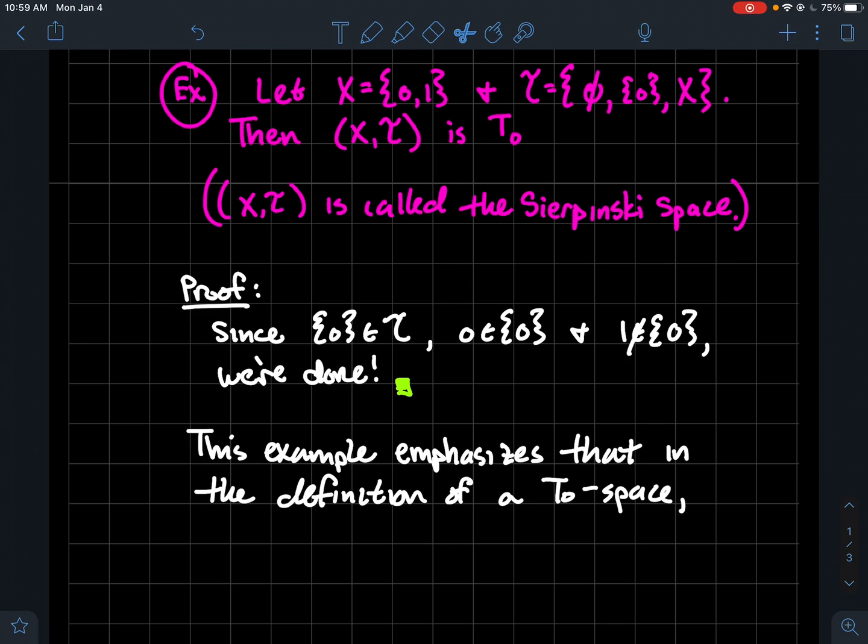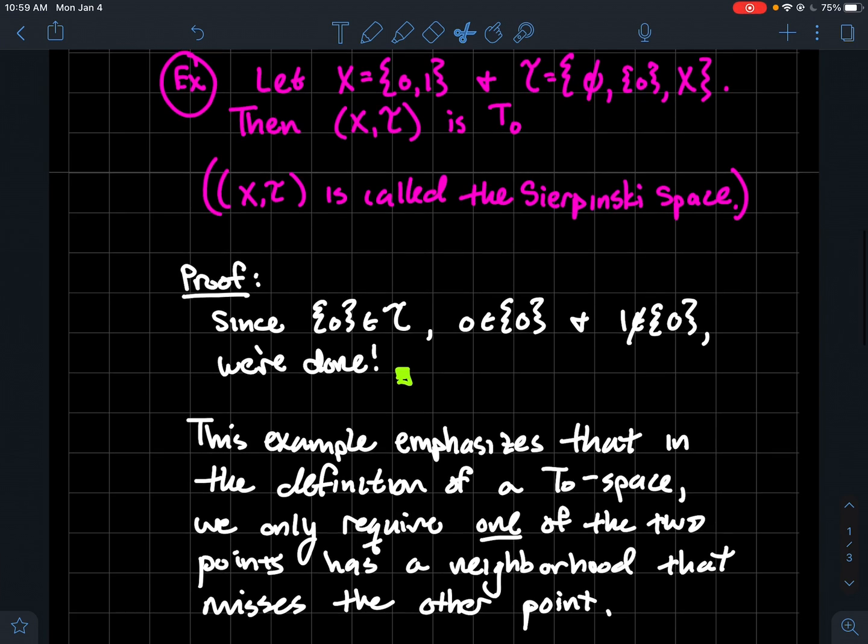Now, maybe you're wondering like, well, don't you need to do the same thing like for 1? And this is where you just need to be very careful when you read the definition of a T₀ space. So this example emphasizes that in the definition of a T₀ space, we really only require that one of the two points in your pair that you're considering has a neighborhood that misses the other point. I don't need the other point to also have its own neighborhood that misses x.